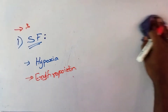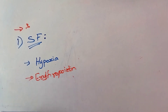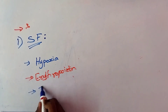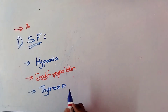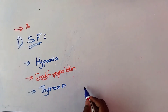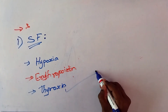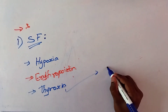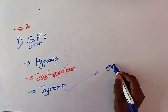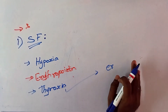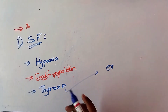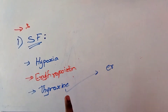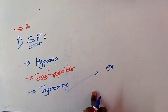The third stimulating factor is thyroxine. Being a general metabolic hormone, thyroxine accelerates the process of erythropoiesis. So hyperthyroidism and polycythemia are common in this condition, or when thyroxine is increased or is more, there may be a cause of hyperthyroidism or polycythemia.